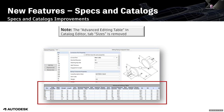An additional note: because we now have the property editor, the advanced editing table in the catalog editor's 'sizes' tab has been removed. You won't see that list anymore — it is not needed, as we now have the property editor.